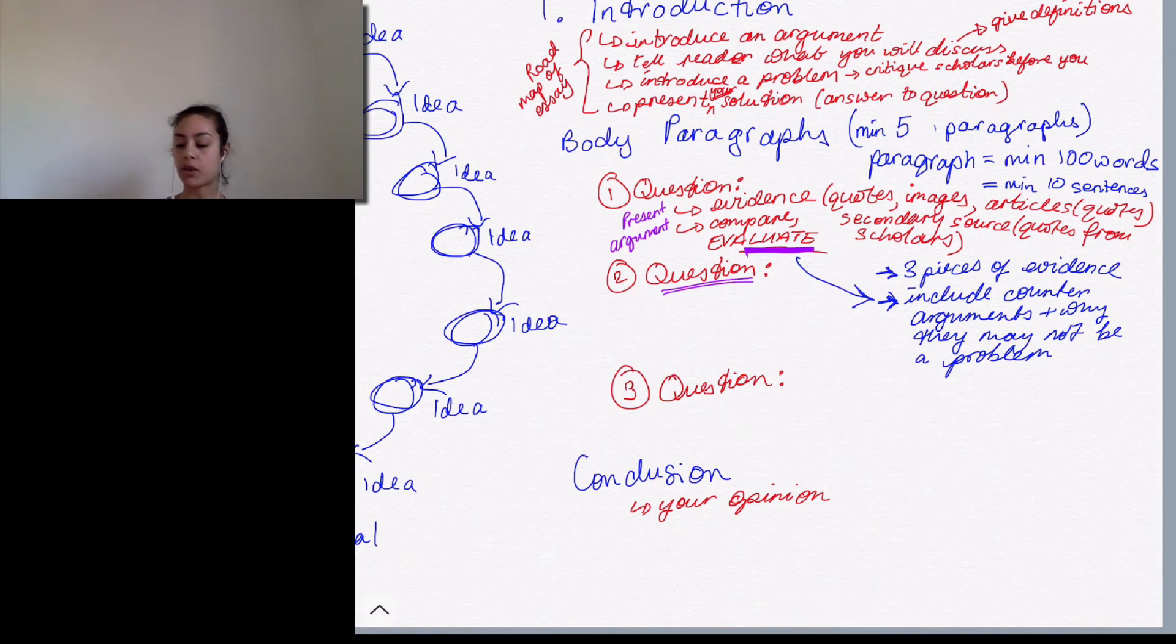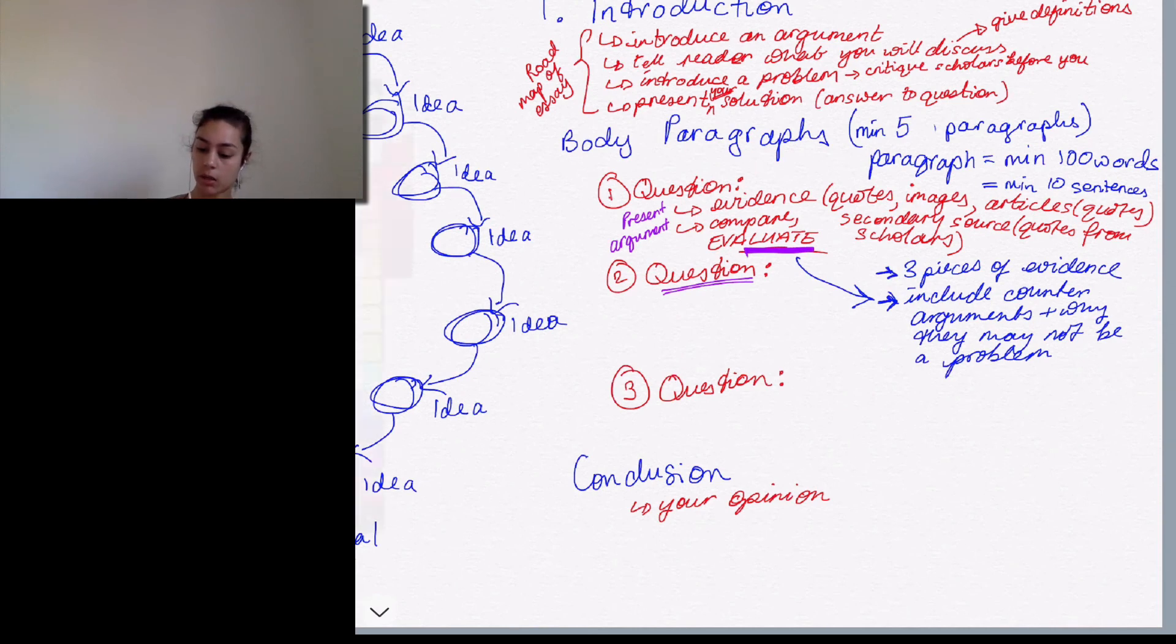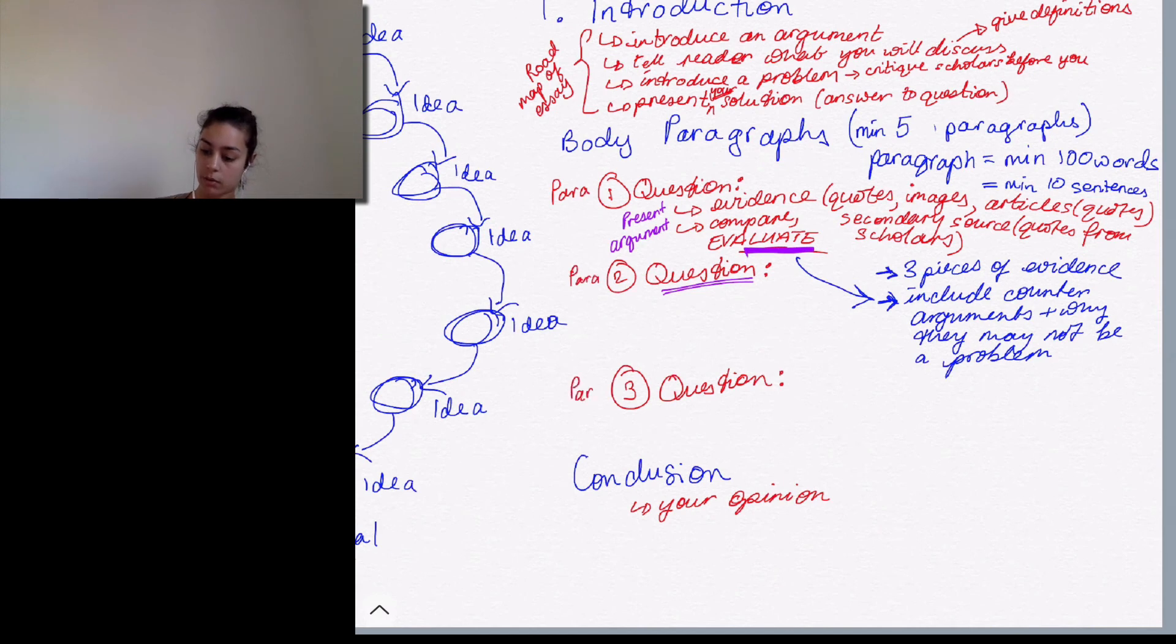Yeah, sorry I just included, this is like paragraph one, paragraph two, I'll make that more clear. Paragraph one, paragraph two, paragraph three. Paragraph, etc. there you go. Does that make sense? Yeah, so you're going to have, like I said, you're going to have a minimum of five body paragraphs. So I've just written out three just to make it look like there's any sort of essay.